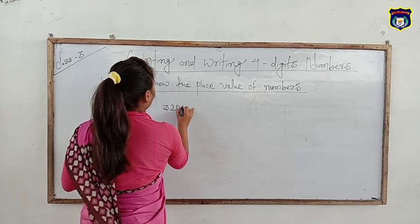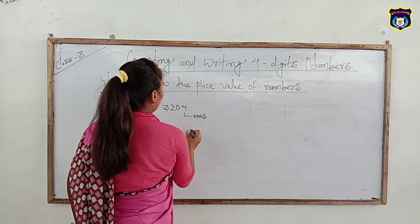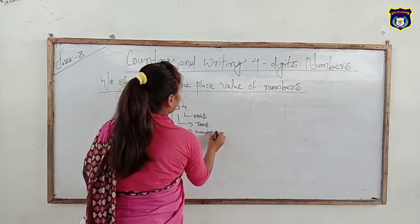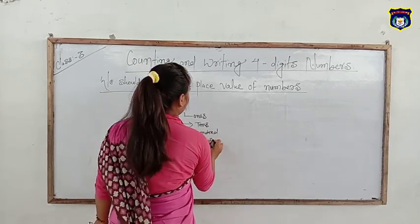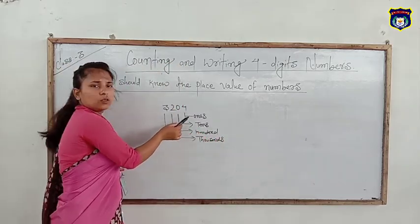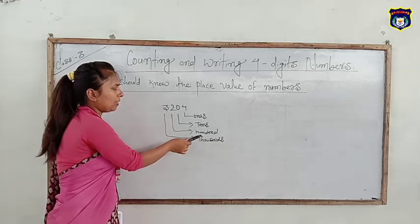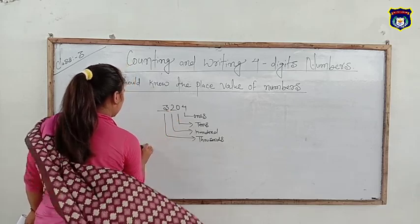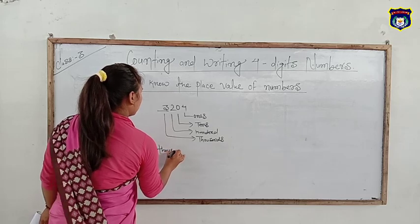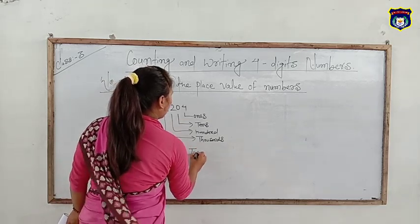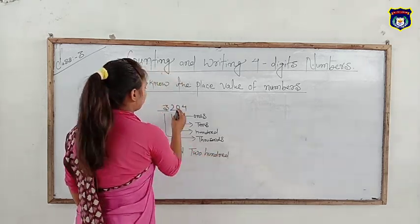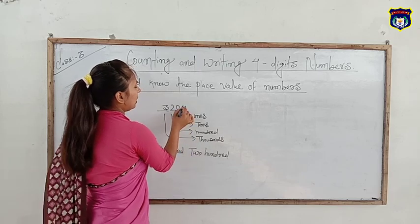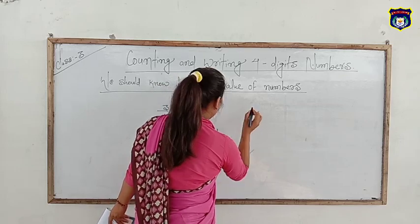Next number: 3,204. 4 is in the ones place, 0 is in the tens place, 2 is in the hundreds place, and 3 is in the thousands place.